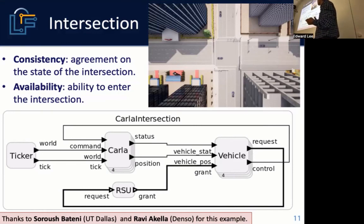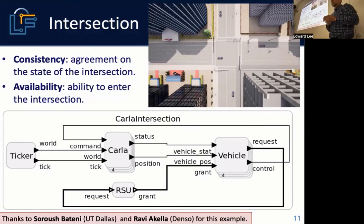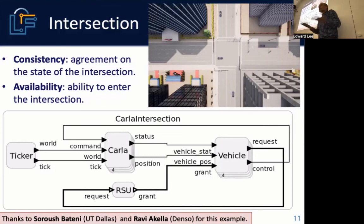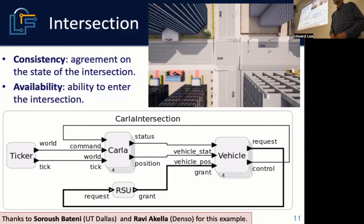For this kind of application, consistency is agreement on the state of the intersection and availability is the ability to enter the intersection. Which do you want to emphasize in the event of failures? Consistency — we'd rather all four cars stop than all four cars enter the intersection at the same time.